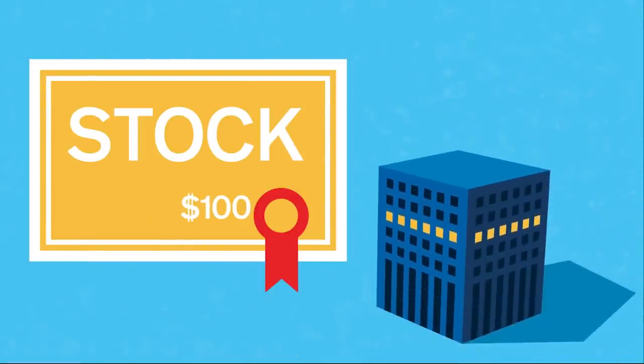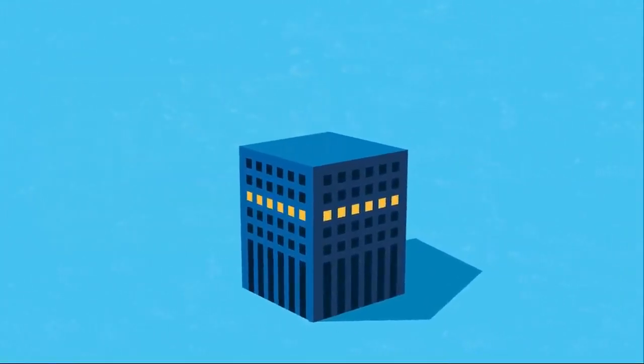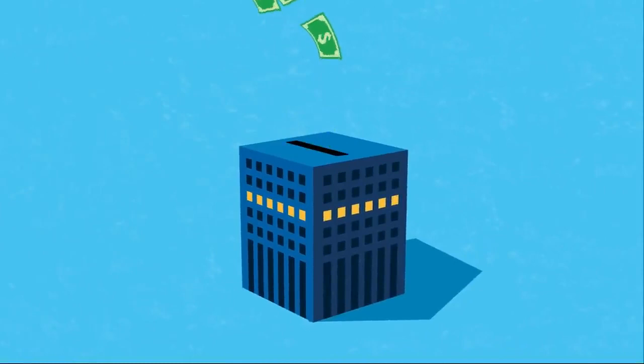These fluctuations determine the amount of profit or loss. Another way to make money is when the company shares its yearly profit with you in the form of a dividend.